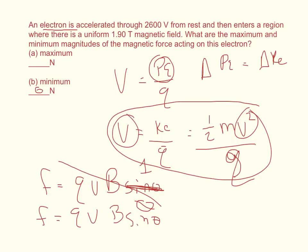If I multiply over Q and multiply over 2, I'll get 2QV is equal to MV squared. And I'll divide by V, so 2Q times the voltage divided by M is equal to the velocity squared.